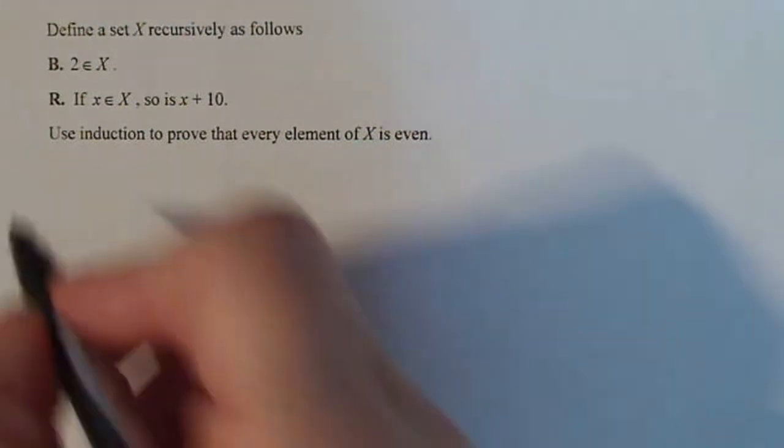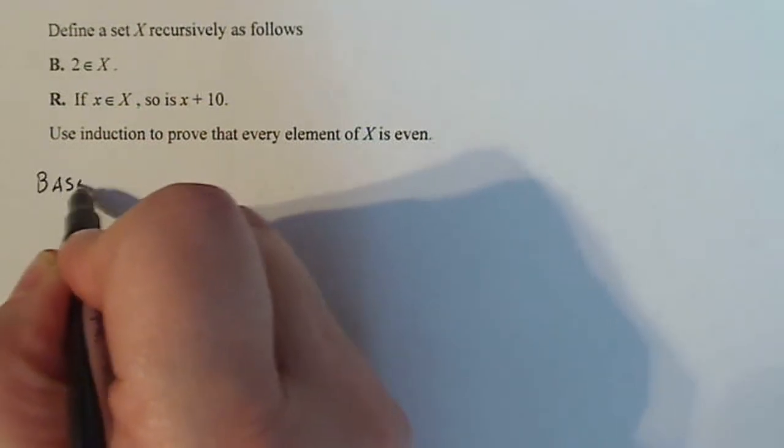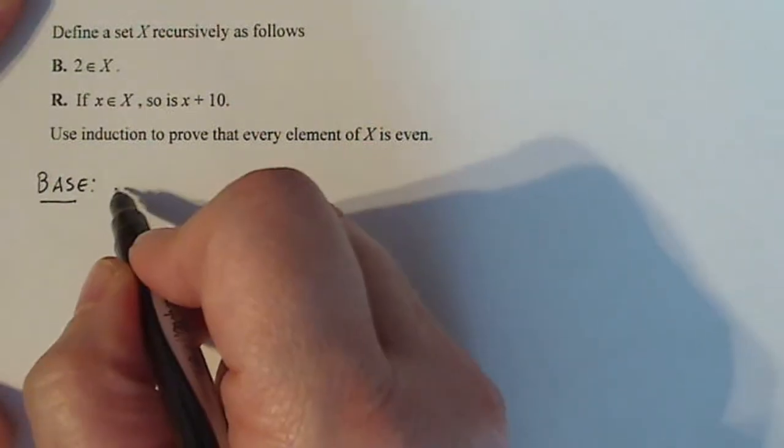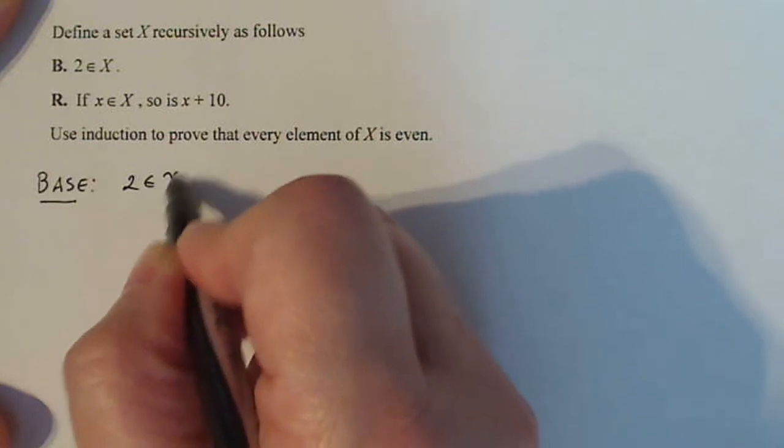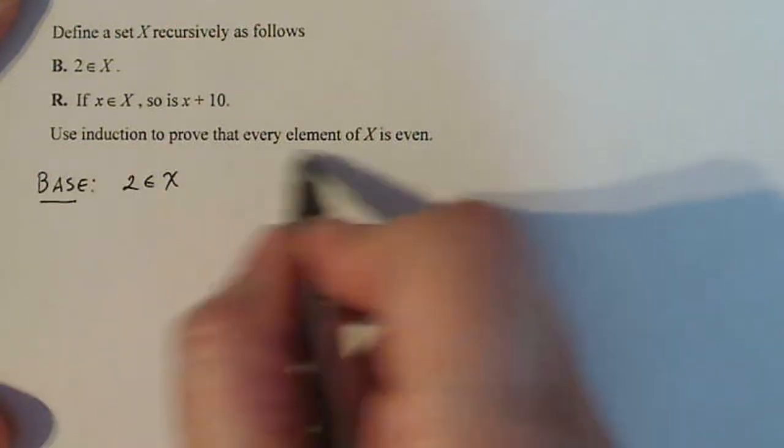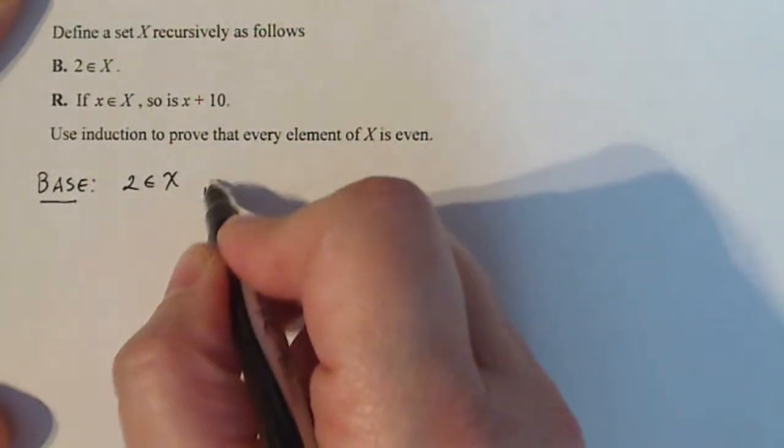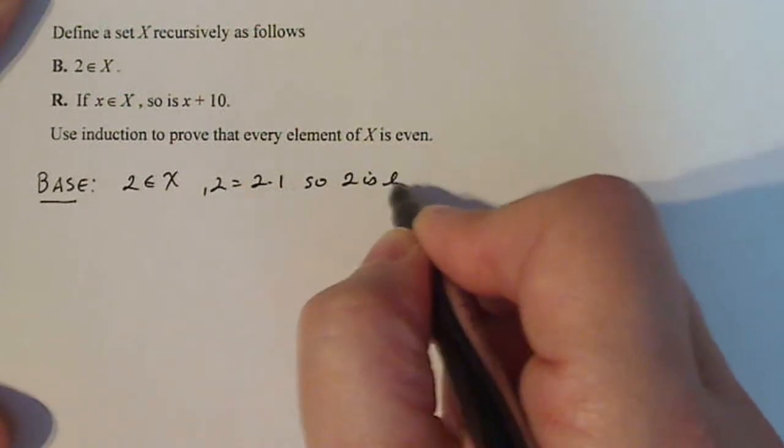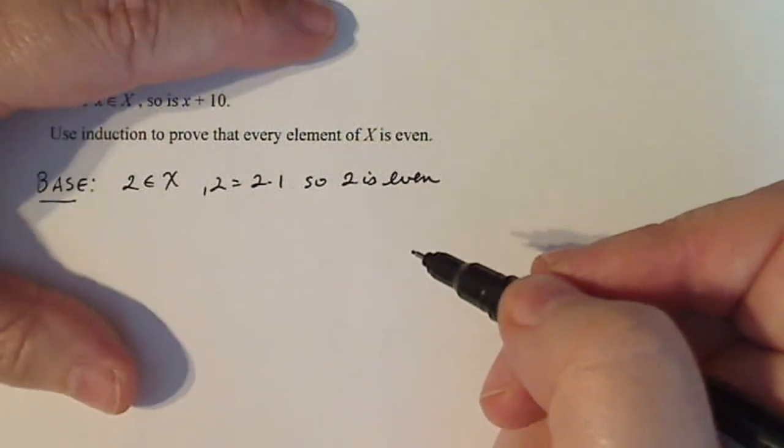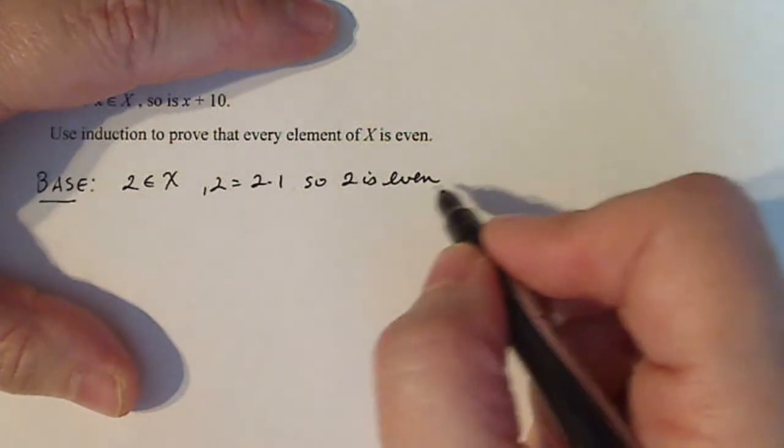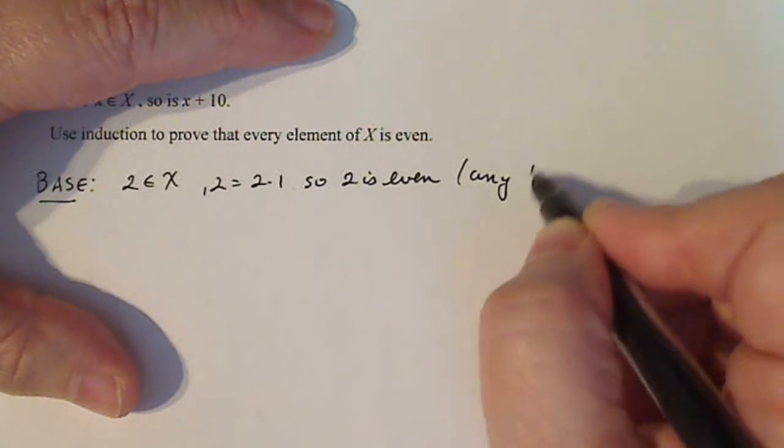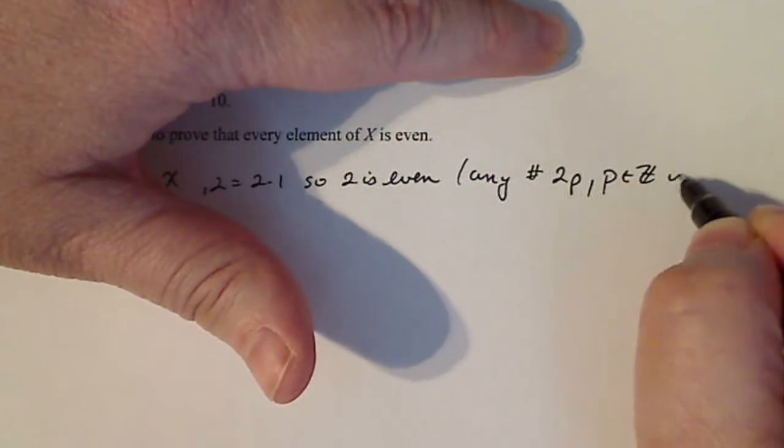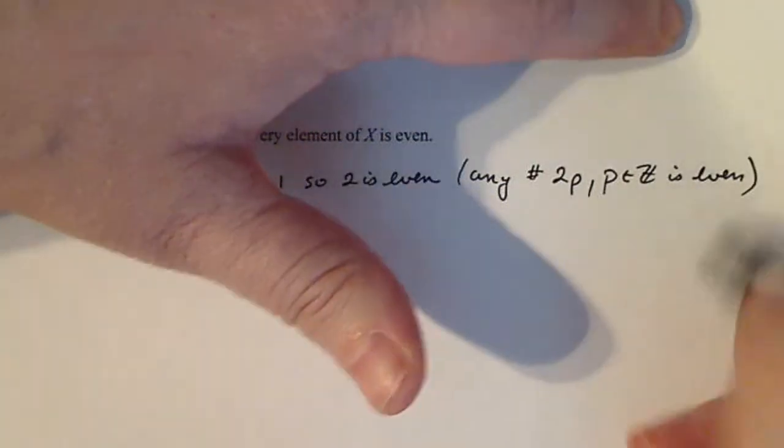All right, so let's do the base case. Now again, it's very comfortable to do a couple base cases just to make sure you're following what's happening. So the base case is 2 and we know that's an element of X, but we want to show that every element of X is even. So I can write 2 as 2 times 1, so 2 is even, and that's based on the fact that any number 2p for p in Z is considered even. Okay, we're going to be using that rule a lot here.